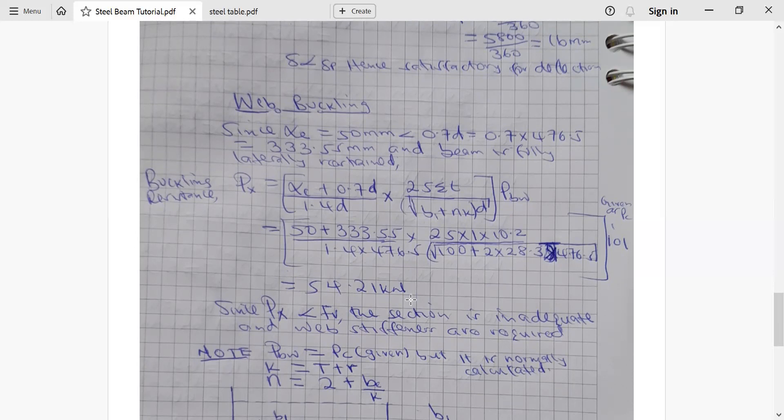but it is subjected to the shear force of 407.74 kilonewton. So this implies that the section is not adequate in regard to buckling resistance. So we have to design web stiffeners to aid the section to withstand the shear force.